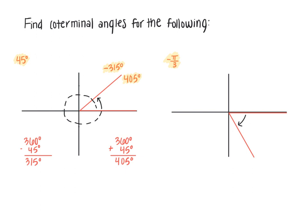Now let's move to the problem in radians. Your initial instinct may be to convert the radian measurement to degrees, but we need to get comfortable dealing with angles in radians, so I'm going to do this entire problem in radians. We need to remember that a full circle equal to 360 degrees is also equal to 2π. Here I have an angle that starts on the x-axis and opens in the clockwise direction to the terminal side, which is equal to negative π over 3 — negative because we're going in the clockwise direction.